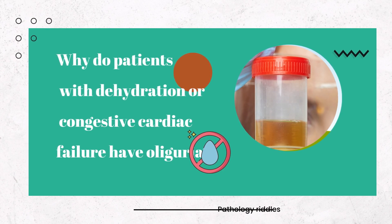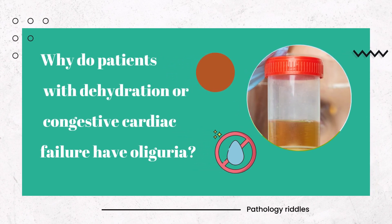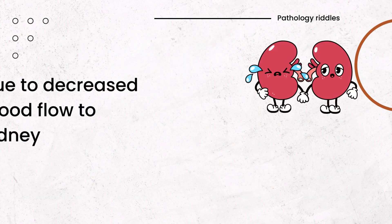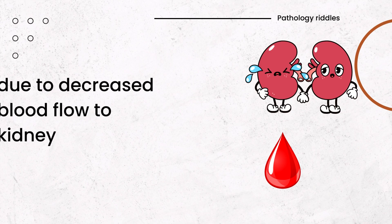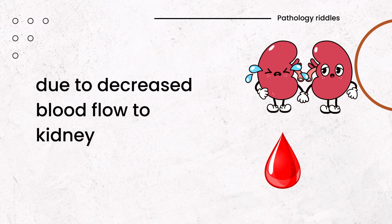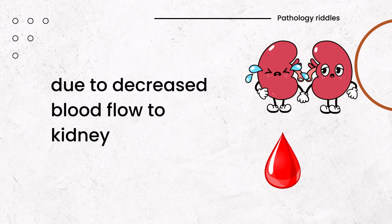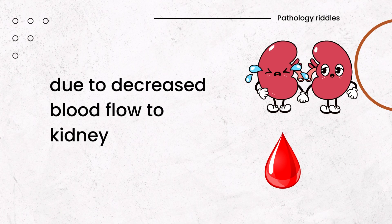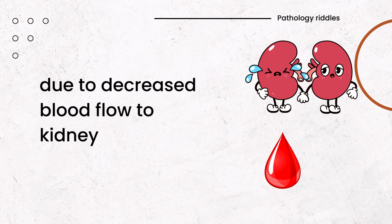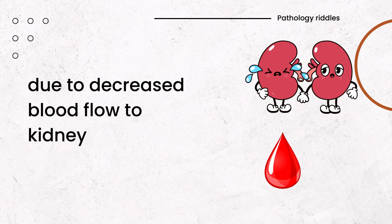Why do patients with dehydration or congestive cardiac failure have oliguria? Mainly because there is a decrease in blood flow to the kidney. The ultrafiltration of blood leads to the production of urine, and if the volume of blood is decreased, the ultrafiltrate will also decrease. Hence, less urine will be produced.